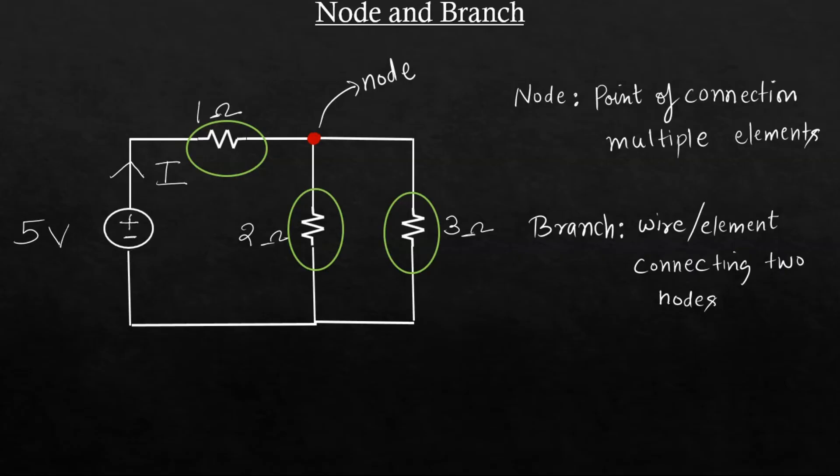So a node is a connection of multiple elements and a branch is an element which connects two nodes. Now with a node we define something called degree. Degree is basically the number of elements that are connected to that node or number of branches.